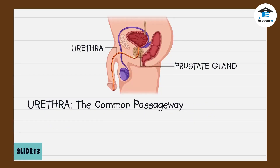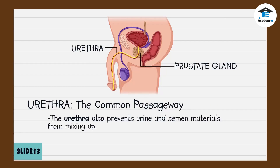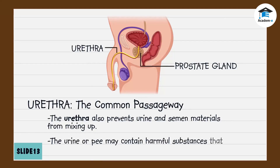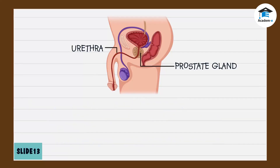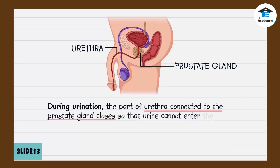As a common passageway of urine and semen, the urethra also prevents urine and semen materials from mixing up. Remember, urine or pee is one of the body's waste materials. It may contain harmful substances that should not be included in the semen.